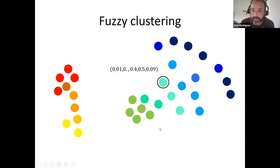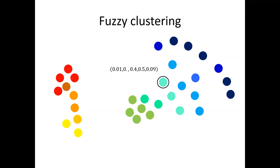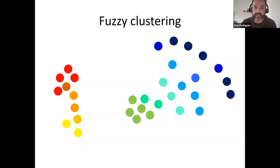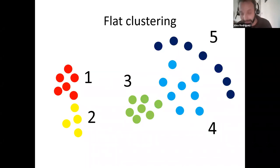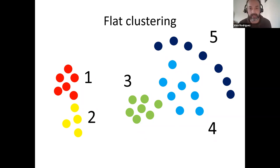A student asks: in flat clustering, is the number of clusters arbitrary or how do you choose five clusters? In this case I chose based on visually seeing the points, but in general we will see techniques for choosing the number of clusters — it's not trivial. This is just an introduction to the different methods; when I explain each method in detail we will cover that point more thoroughly.